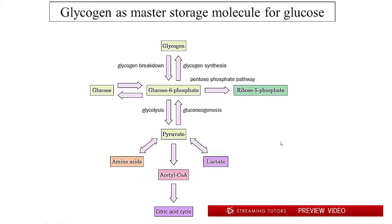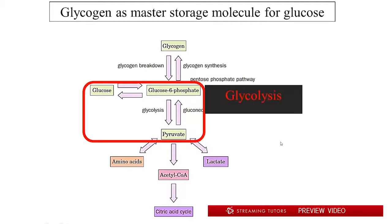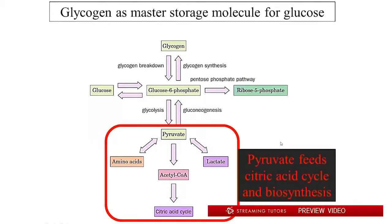This is a diagram that summarizes the major pathways that either converge upon or diverge from glucose 6-phosphate, the phosphorylation product of glucose. Most of them we've already dealt with in detail, and one more we'll deal with in the next segment. The first one is glycolysis, where glucose through glucose 6-phosphate is degraded to pyruvate. Pyruvate is what fuels the citric acid cycle in the mitochondria.